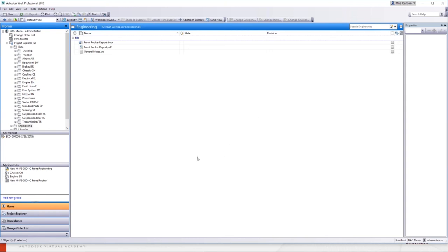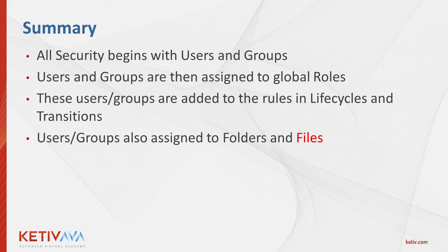So to recap: all security begins with a user in a group. The next level is you have to assign them a role — based upon your group, what should these guys be able to do as a whole inside the vault? We apply those roles to those groups. Then we start to do the granular point: we go into lifecycles, transitions, files, and folders if necessary. Files is red-flagged there — just be careful when talking about that. Start to get that granular level of control. Typically it's to make people feel comfortable — the idea of spreading vault out in the organization, giving each department their own area.